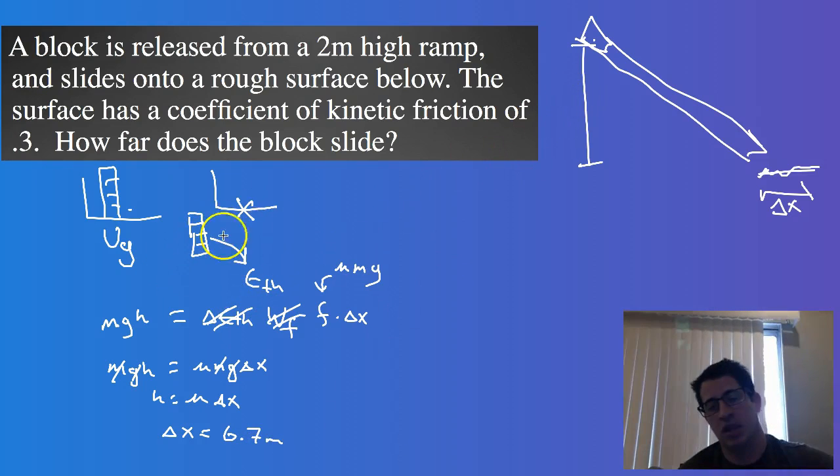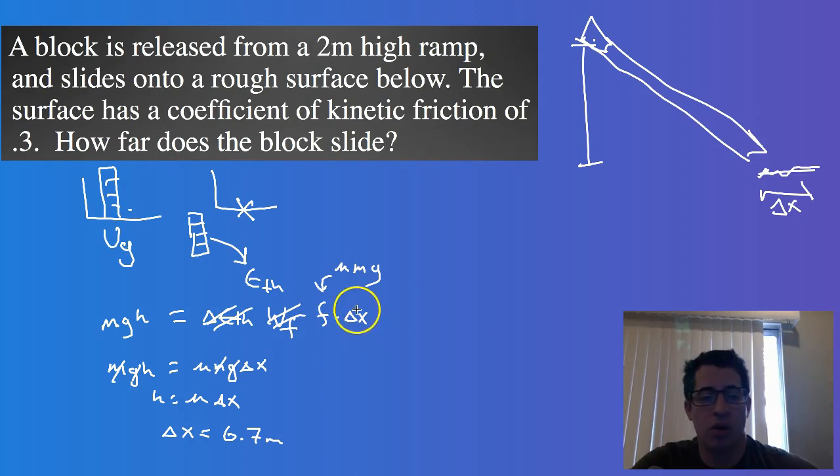And so this is kind of taking what we learned, what we're learning this chapter and what we learned last chapter and bringing them together. So we started off with gravitational potential energy. We can kind of even graph this. So if we graph, this line represents gravitational potential energy over distance.